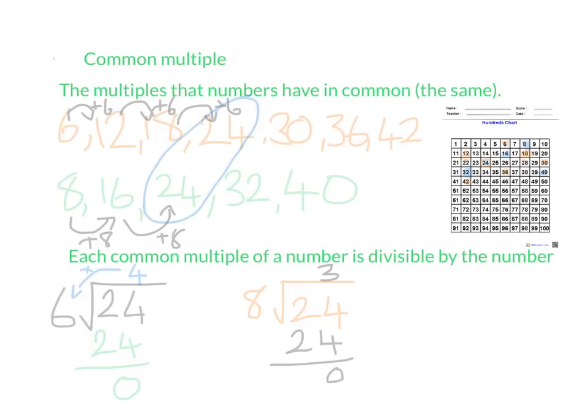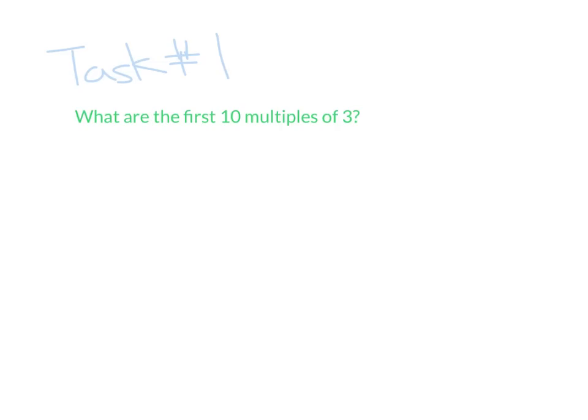So now we're going to go to tasks. So our first task says: what are the first 10 multiples of 3? Now it's up to you whether you use the hundreds chart or you actually just add 3 each time. I want you to pause the video, try it, and then come back.